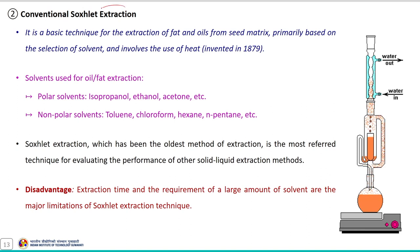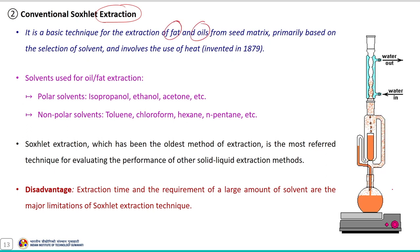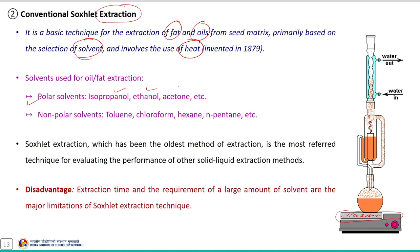Next is the conventional Soxhlet extraction method. This diagram shows the principle of Soxhlet extraction from a given biomass material. It is a basic technique for extraction of fats and oil from the seed matrix and is primarily based on the selection of solvent and also involves heat. Solvents used include polar solvents such as isopropanol, ethanol, acetone, or non-polar solvents like toluene, hexane, chloroform and n-pentane. The biomass material is placed in the thimble and appropriate solvents are used for extraction.